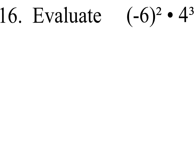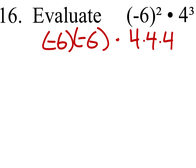So to start this out, we're just going to evaluate this first. We have negative 6 squared, which is negative 6 times negative 6, and that would be multiplied by 4 cubed, which is 4 times 4 times 4.